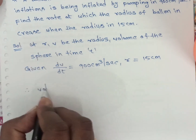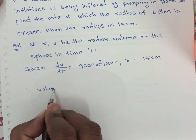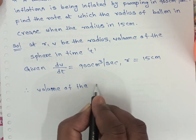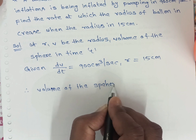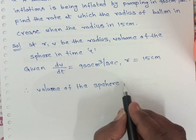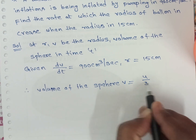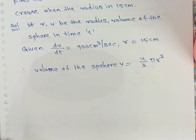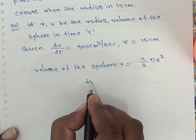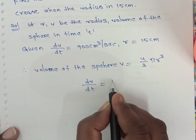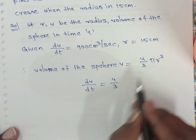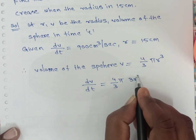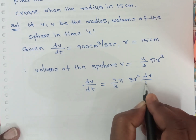The volume of the sphere formula: V is equal to 4 thirds pi R cubed. Now differentiating with respect to time, DV by DT is equal to 4 by 3 pi into 3R squared into DR by DT, where pi is a constant.